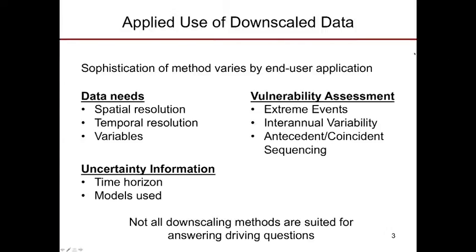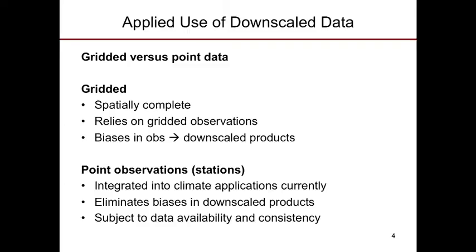We can think about sources of variability dealing with weather extremes as well as climate extremes, getting towards higher-order climate information. Another important aspect that has been overlooked in the applied use of downscaled data is the question of whether we should use gridded data or point/station-based data. There are advantages with both.